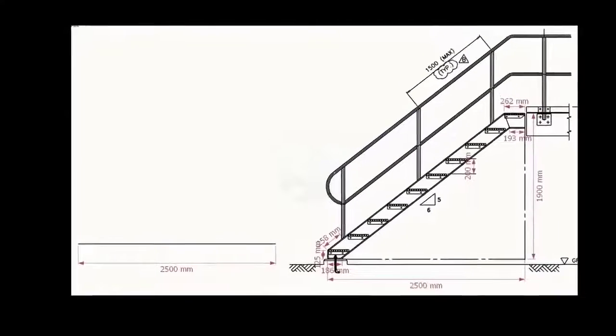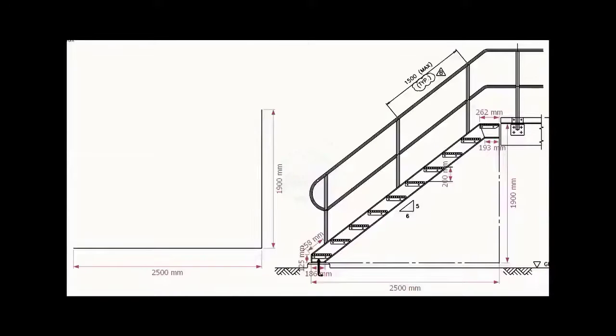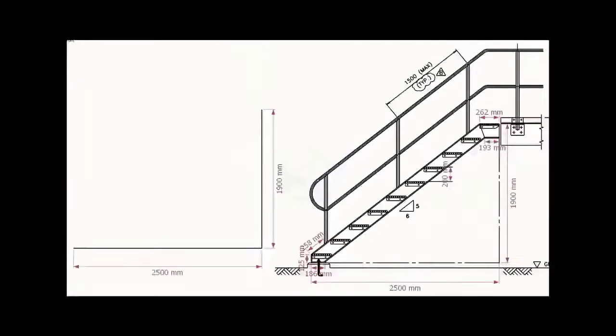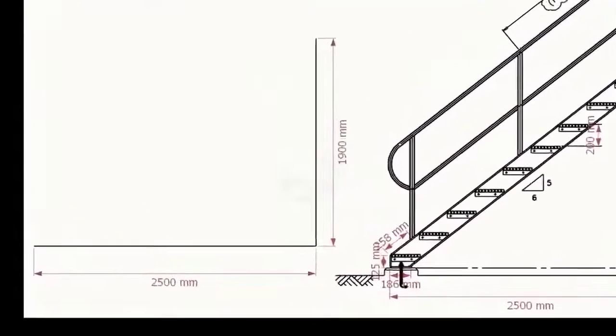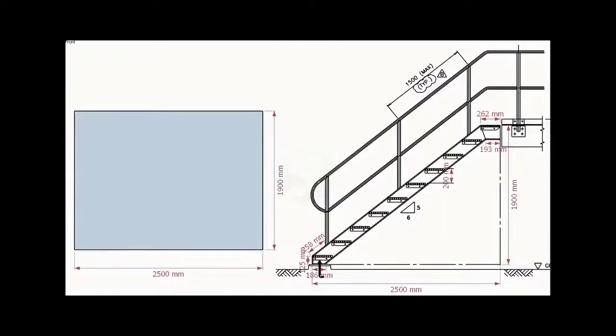Draw the bottom length 2500 mm. Draw the width 1900 mm. Make sure the including angle is 90 degree. Let us complete the rectangle.